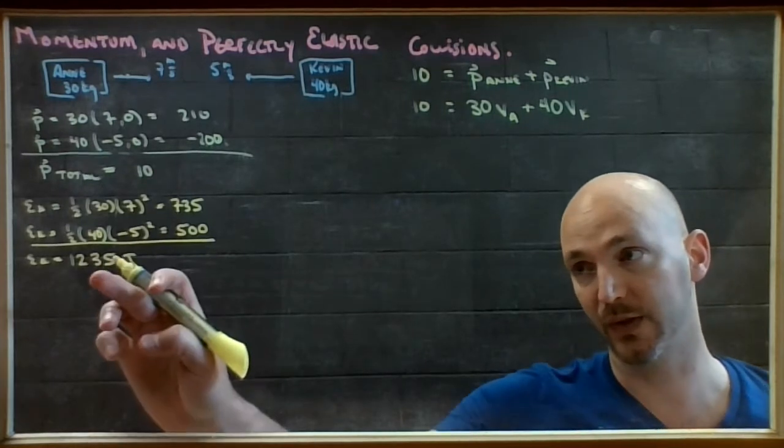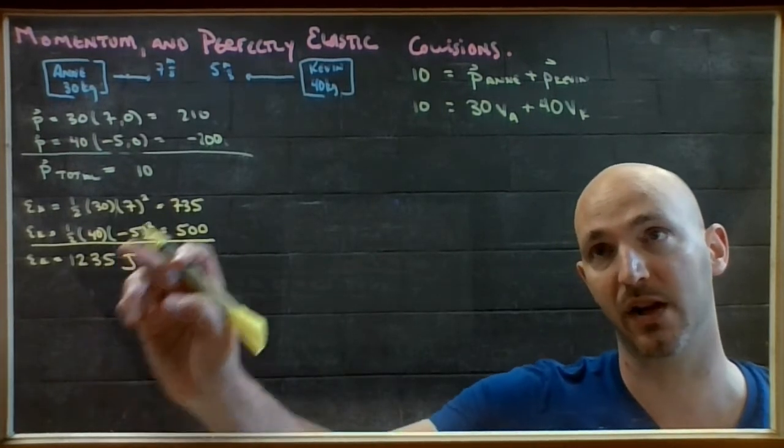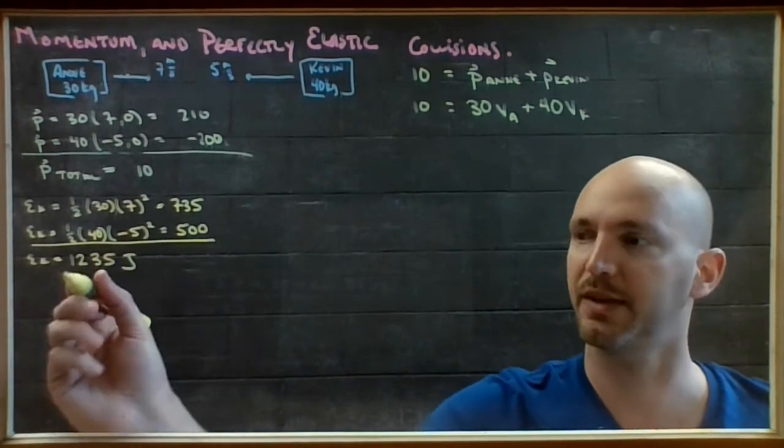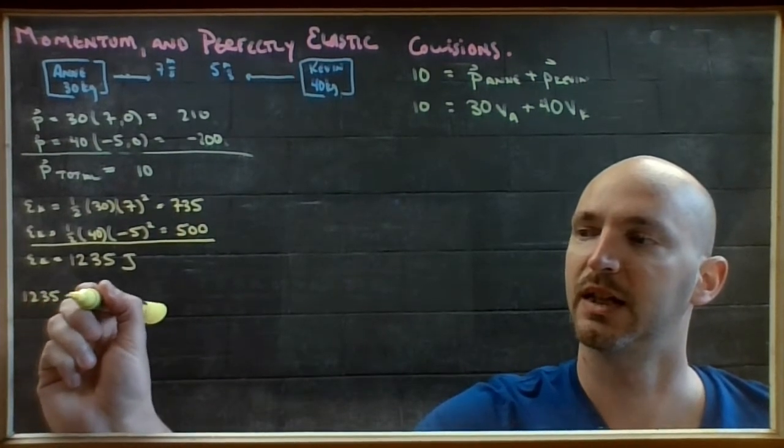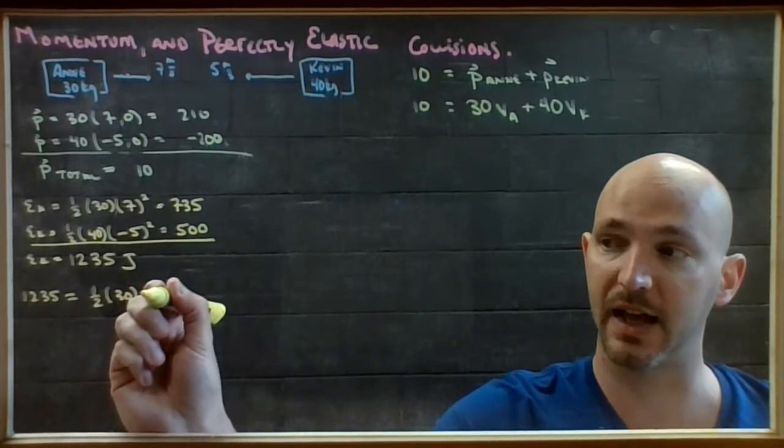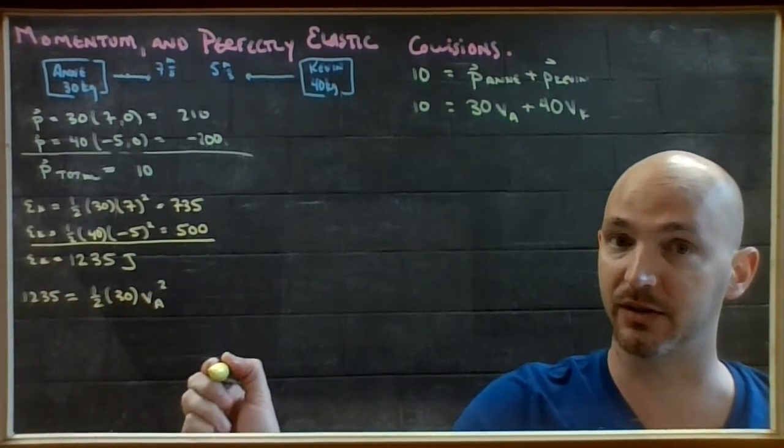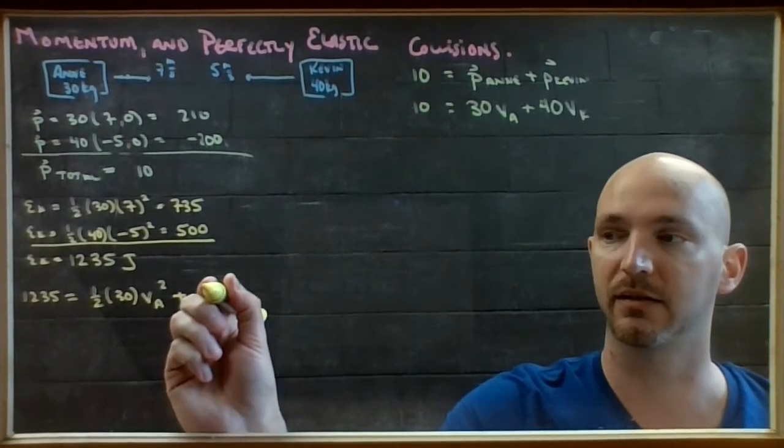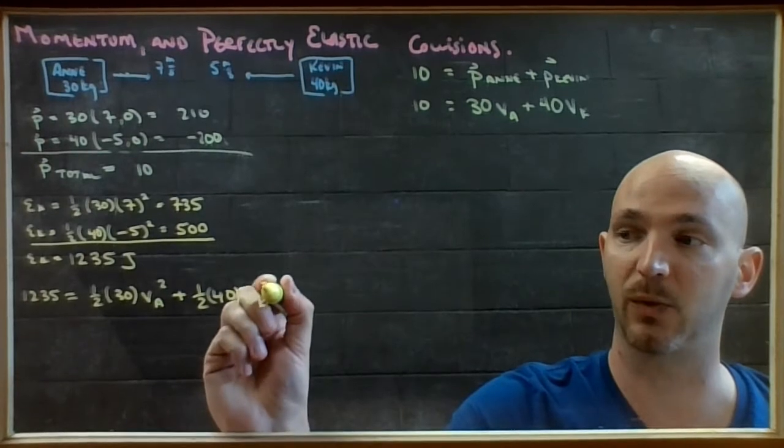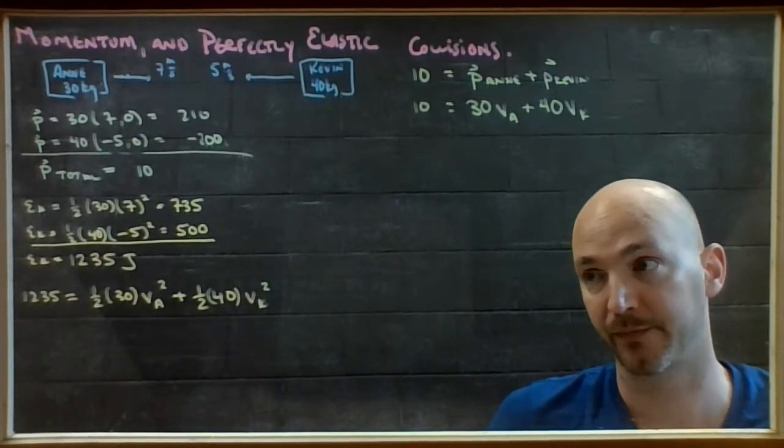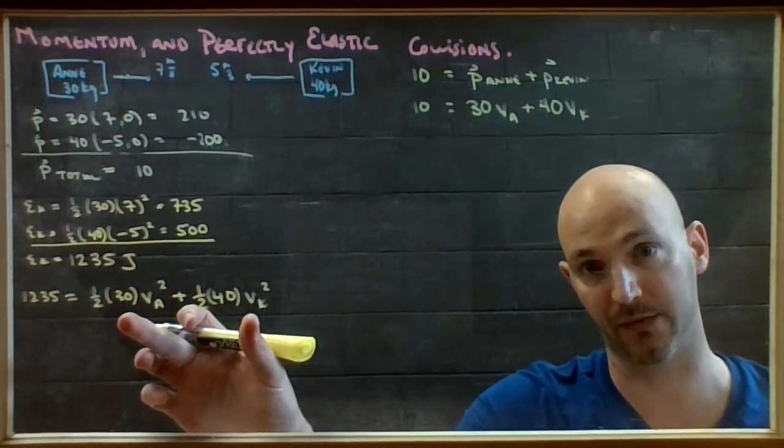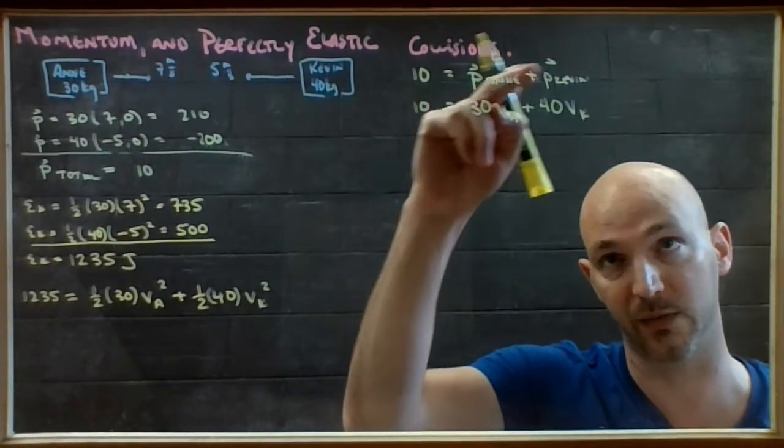I'm going to use that total amount of energy to try and construct an equation like this one where I use the total momentum. So this 1,235 joules is going to have to be enough energy to get Ann at 30 kilograms traveling at whatever speed she's going after the collision, squared, and enough energy to pay for Kevin, who is 40 kilograms, to be traveling at whatever speed Kevin is going, squared. All I've done is kinetic energy before the collision has to equal the kinetic energy after the collision, the same way as I did momentum before equals momentum after.